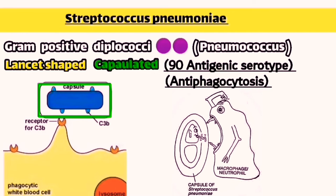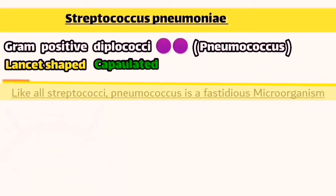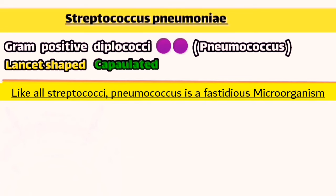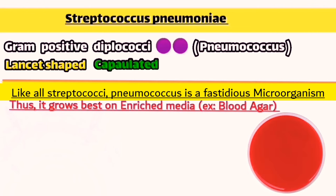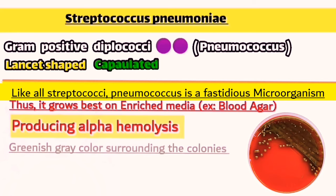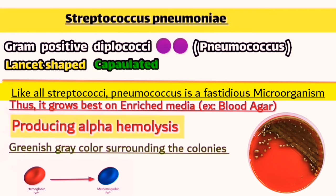Like all other Streptococci, the Streptococcus pneumoniae is a fastidious microorganism, so it can only grow on enriched media, and the best enriched media for all Streptococci is the blood agar. The Strept pneumoniae shows alpha-hemolysis on the blood agar, which appears as a greenish-gray colored area surrounding the colonies. This occurs due to the streptococcal production of alpha-hemolysin toxin, which transforms the hemoglobin to methemoglobin.